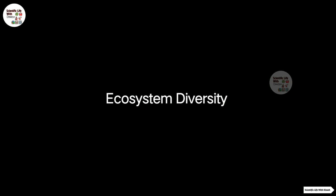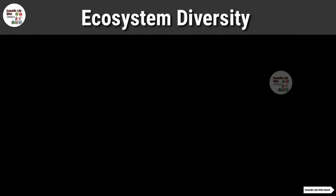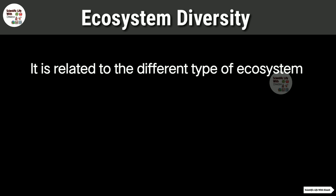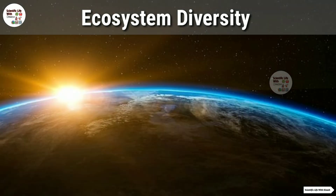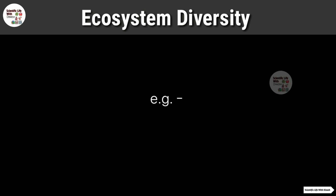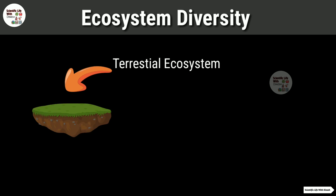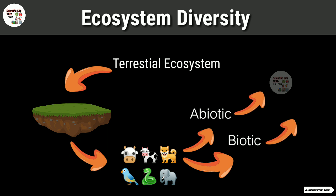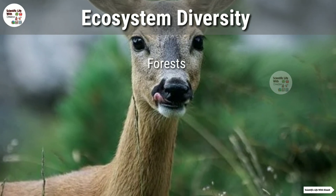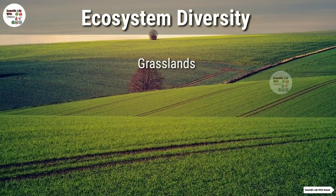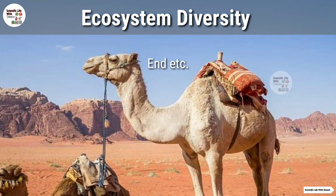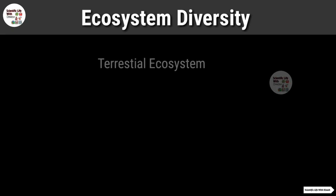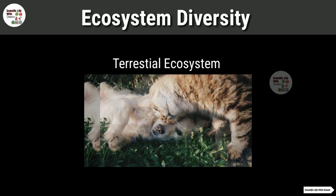Now I will discuss what is ecosystem diversity. It is related to the different types of ecosystems or habitats present in the world. For example, terrestrial and aquatic. Terrestrial ecosystem is a land-based community of organisms and interactions of biotic and abiotic components in a given area — examples include forests, grasslands, deserts, etc.